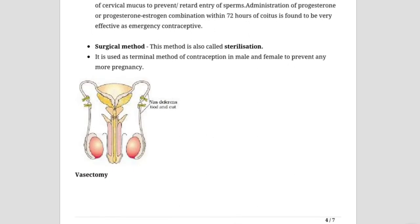If a woman forgets to take a tablet, she can take it again up to 72 hours later and it should still be effective. If one does not prefer oral pills, a permanent surgical method can be used. There are two kinds: tubectomy and vasectomy.